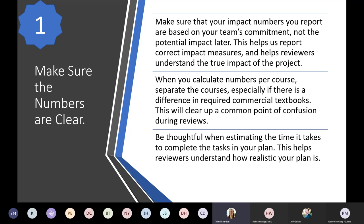The first tip: make sure that the numbers in your proposal are clear. We want to make sure that your impact numbers are based on your team's commitment and not the potential impact later. You can discuss the potential impact in your narrative, but when you're putting in the actual numbers of impact that are happening based on this project, keep that to your commitment.